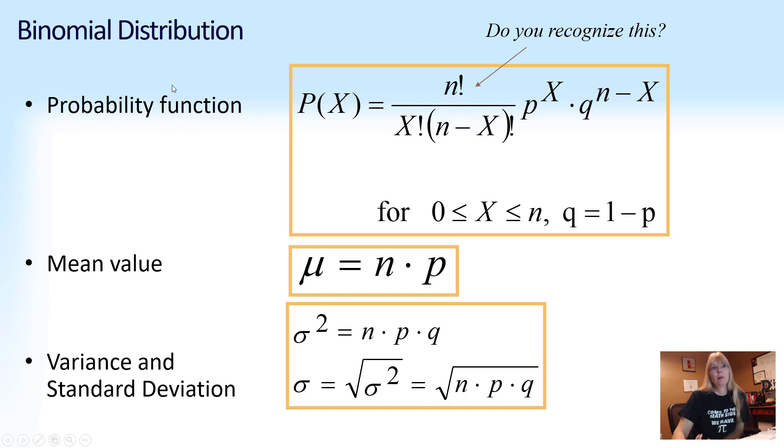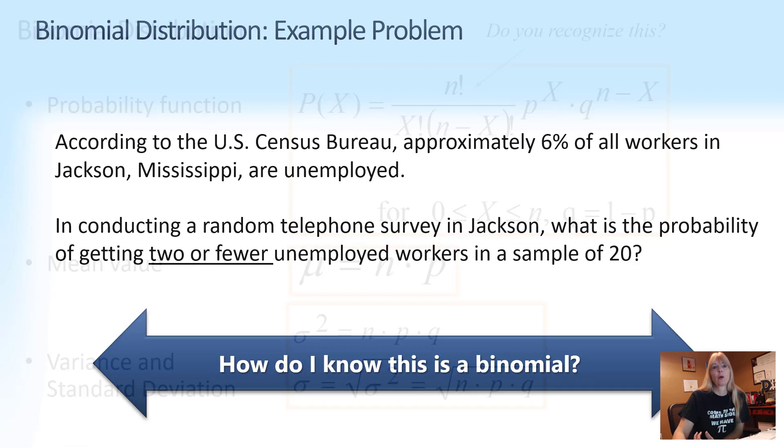The mean of a binomial distribution, pretty easy. You just take the number of trials times the probability of success. The variance, number of trials, probability of success, probability of failures, multiply them. And then standard deviation, square root that.